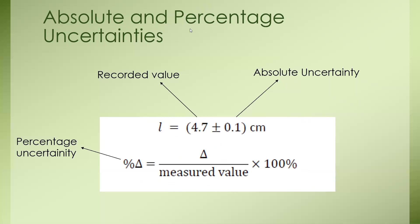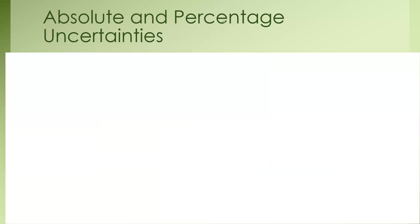What if the quantities have a certain power or exponent? For example, you are finding the cross-sectional area which is πR². The value of the radius is given as 3 ± 0.1 centimeters.